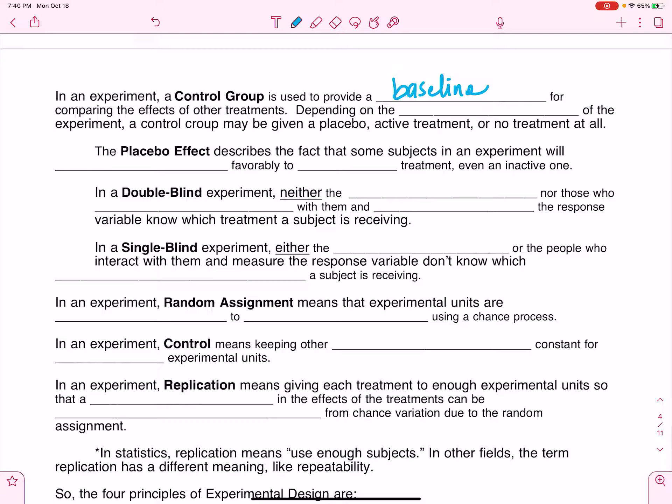Depending on the purpose of the experiment, a control group may be given a placebo, active treatment, or no treatment at all.